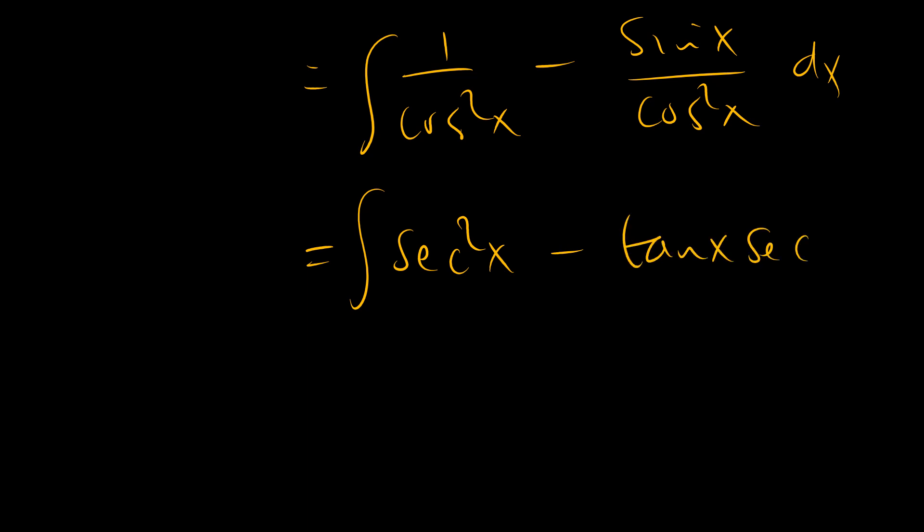And this becomes 1 over cosine squared x minus sine x over cosine squared x. So this is the integral of sec squared x minus the integral of tangent x sec x.